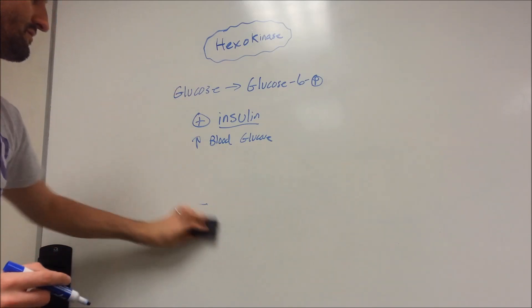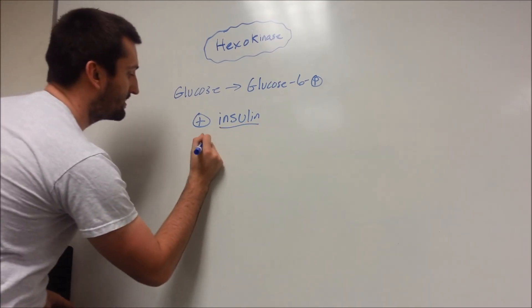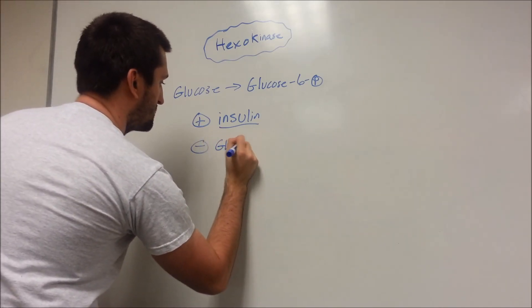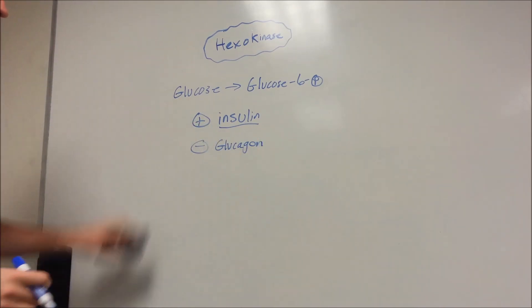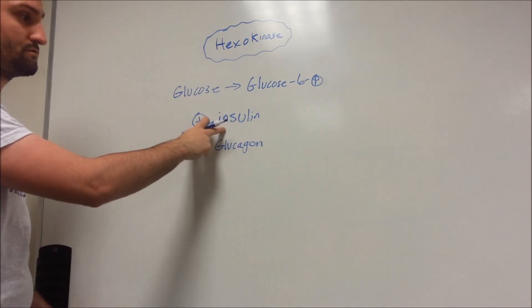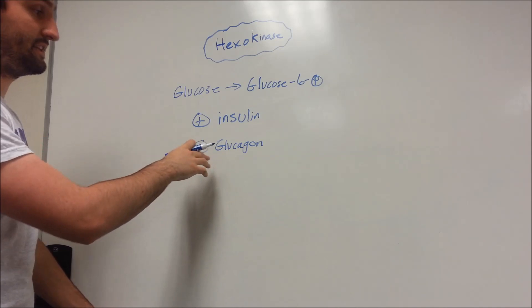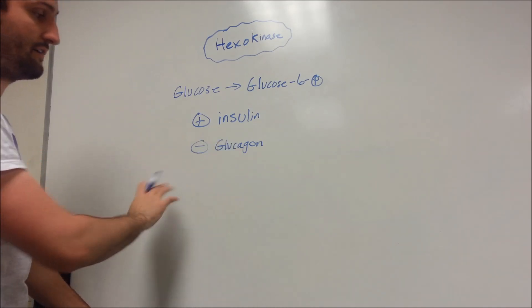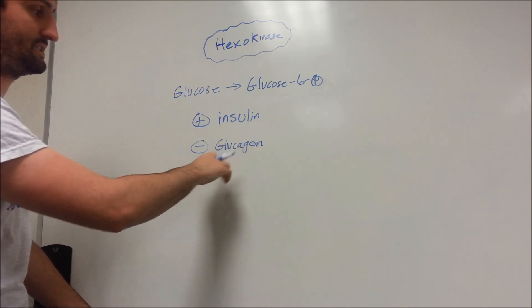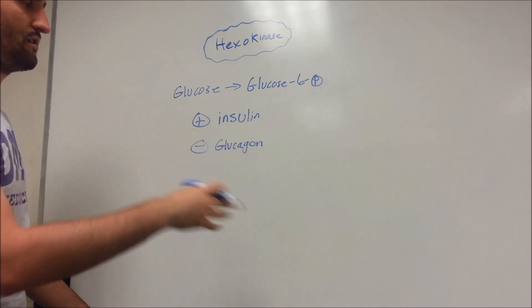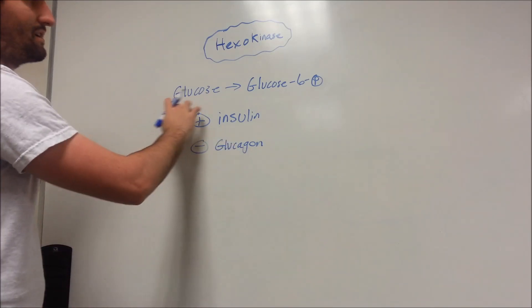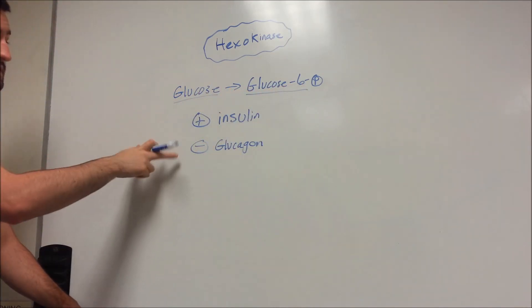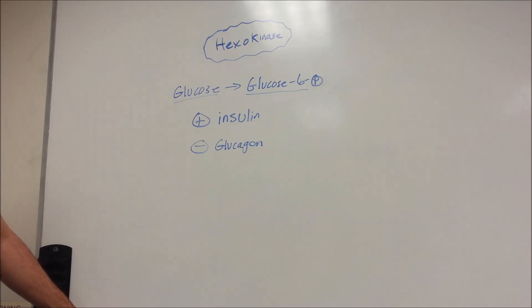Conversely, what's going to negatively inhibit it? Glucagon. Insulin and glucagon are natural enemies. Insulin stimulates glucose to go into cells; glucagon stimulates glucose to leave cells. When you don't have very much glucose in the bloodstream, glucagon is stimulated, pouring glucose into the bloodstream from the cells. So this enzyme — glucose to glucose-6-phosphate — is stimulated by insulin and inhibited by glucagon.